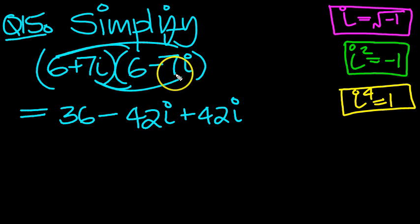And then the last term, 7 times 7 is 49 with a minus. But we've also got i times i, which is i squared, which is another minus, to make a plus.